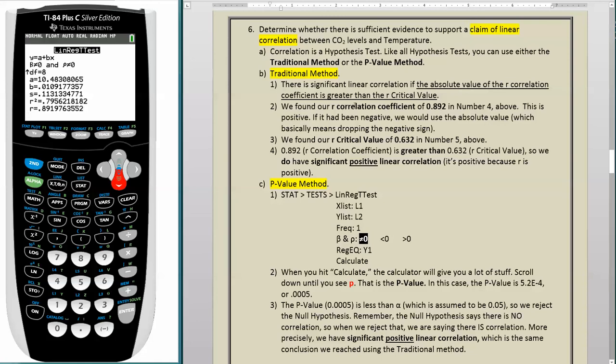We found our R correlation coefficient of 0.892 in number 4 above. This is positive. In other words, we're just saying this is not a negative number, this is a positive number. If it had been negative, we would use the absolute value, which basically means just dropping the negative sign. We also found our R critical value of 0.632 in number 5 above.